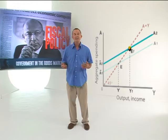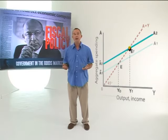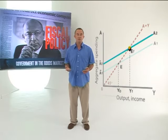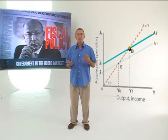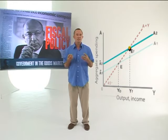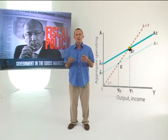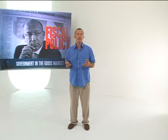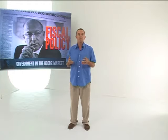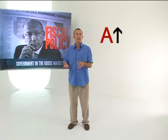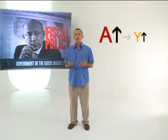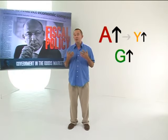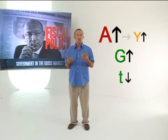This can be achieved by an expansionary fiscal policy. A fiscal policy is expansionary when it seeks to increase total spending, resulting in higher output and income. This can be achieved by increasing government spending, or by reducing income tax, or both.